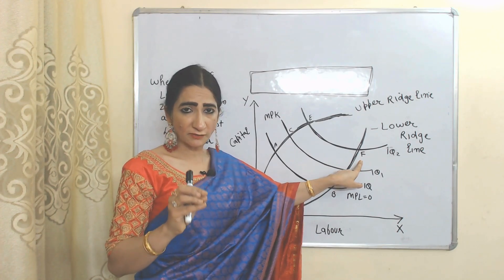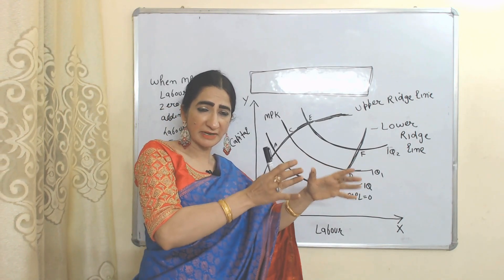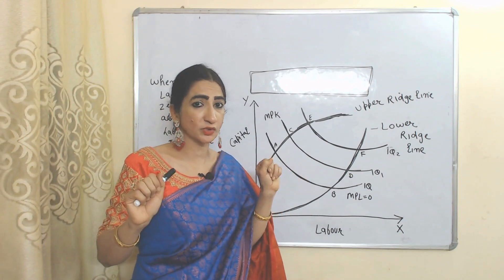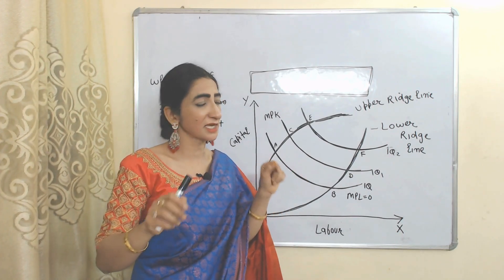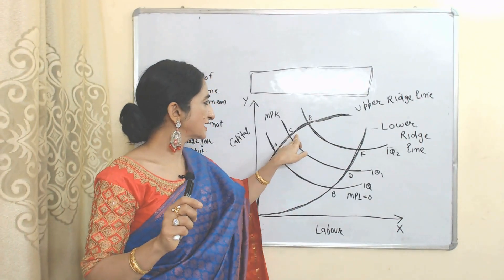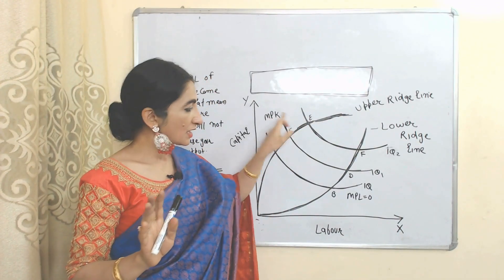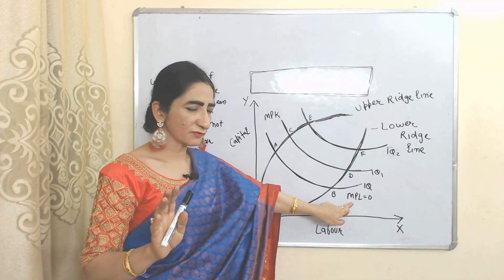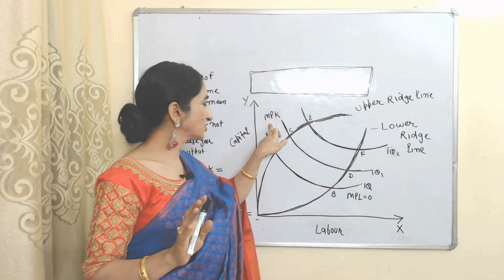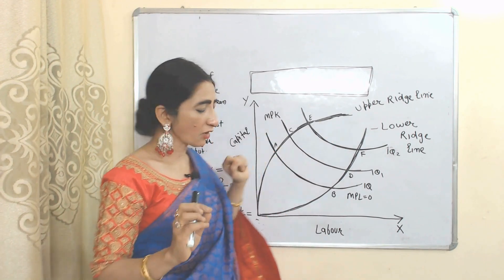Marginal product of labor equals zero means that if we apply more labor, our output will not increase but our cost can increase. Similarly, at the upper ridgeline — at points A, C, and E — the marginal product of capital is zero. So, marginal product of labor is zero on the lower ridgeline and marginal product of capital is zero on the upper ridgeline.